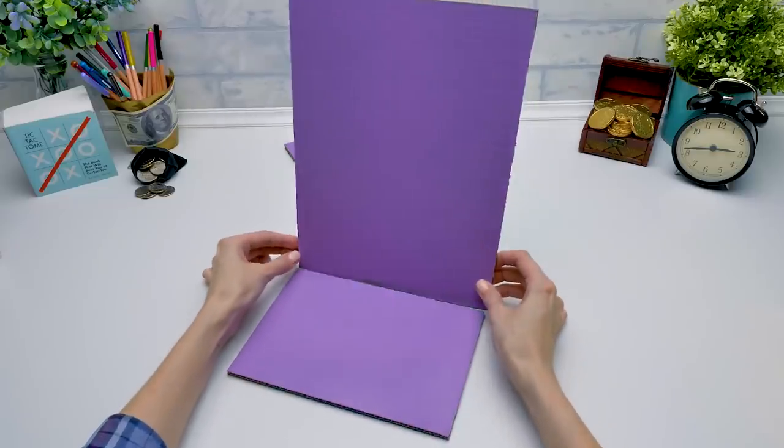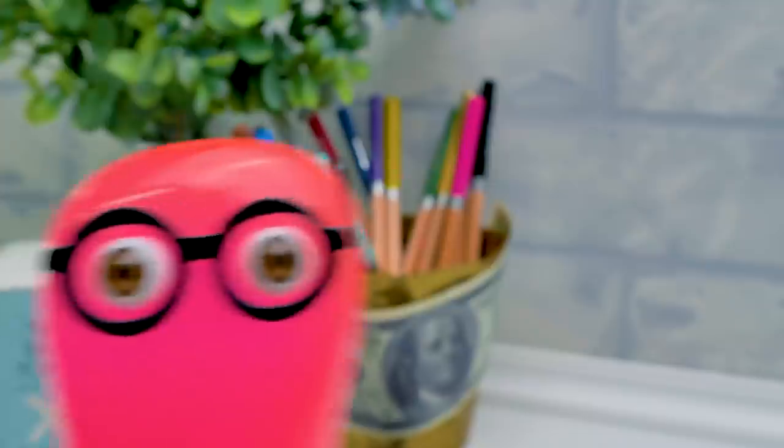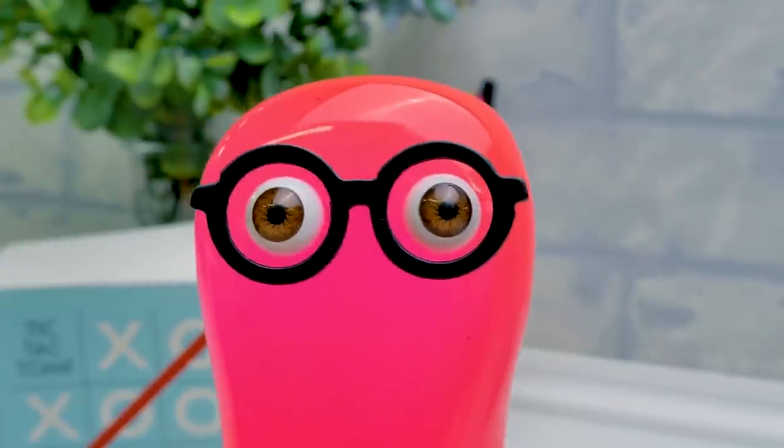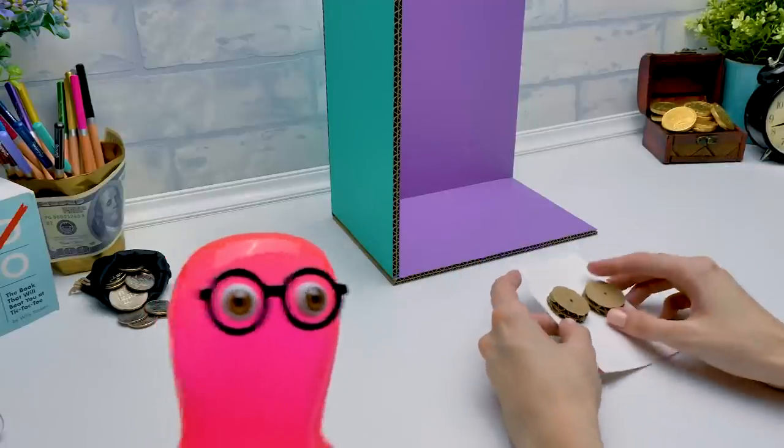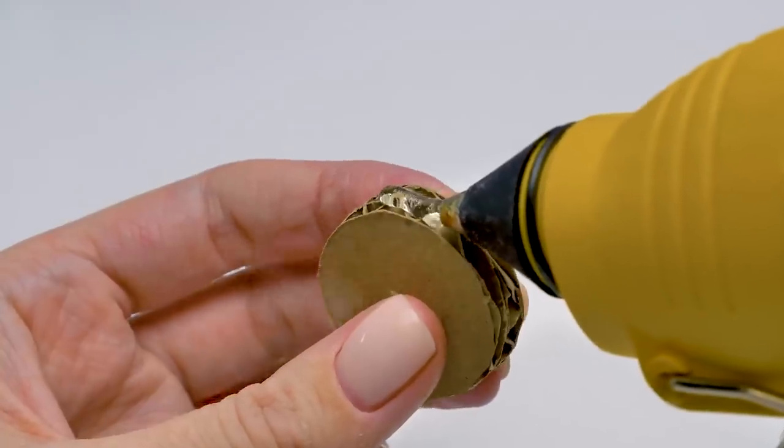Now we glue a part of the ATM body. Our ATM will be a small one, but with a very interesting mechanism. Why? Let's make a big one so we can get lots of money. The amount of money inside does not depend on the ATM size, Sammy. On what, then?